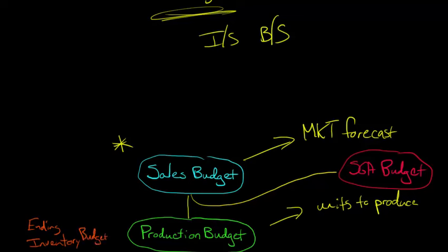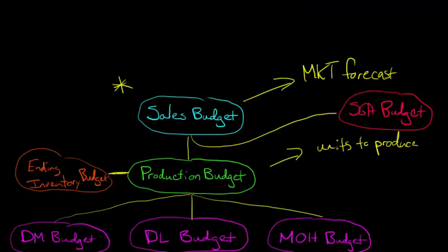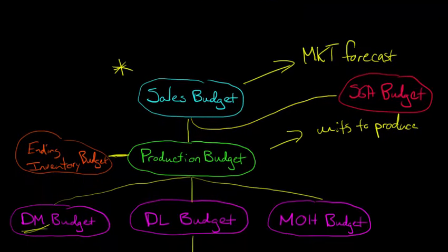Let's follow this progression from top to bottom. The ending inventory budget and SG&A are on the side — let's leave those aside for a second. We've got our sales budget that allows us to put together the production budget — how many units we need to produce. Now that we know how many units to produce, we need to think about direct materials, direct labor, and manufacturing overhead.